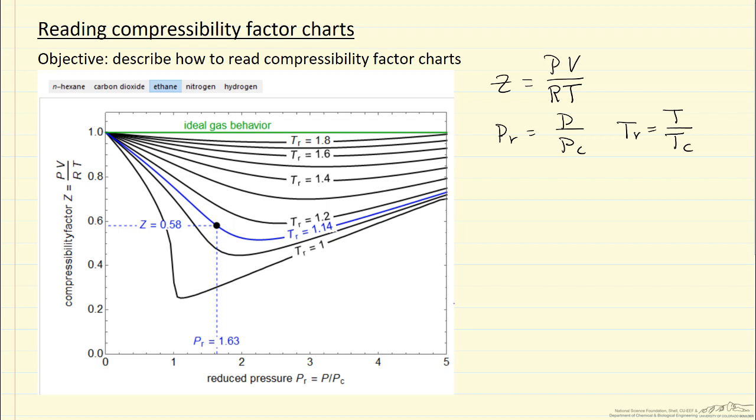The idea is the theory of corresponding states says that deviations from ideal gas are going to depend on where we are on the pressure-temperature diagram relative to the critical pressure and temperature.